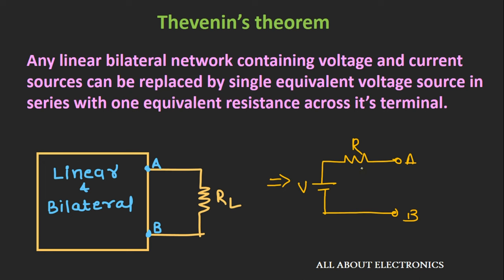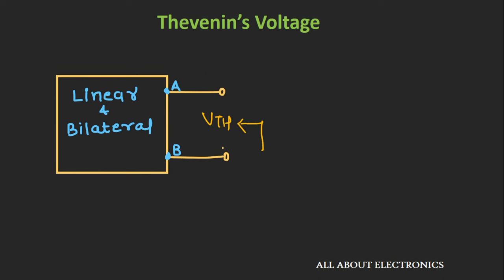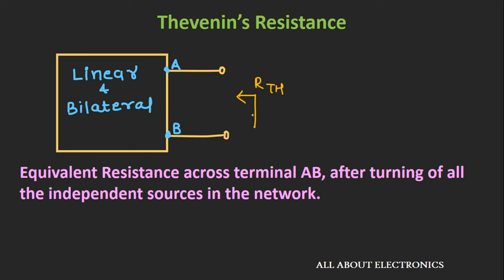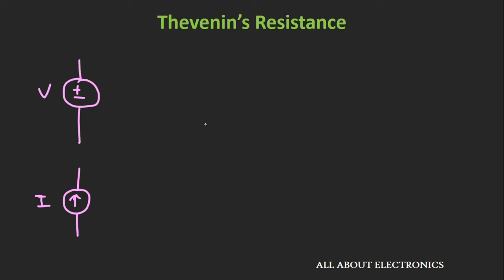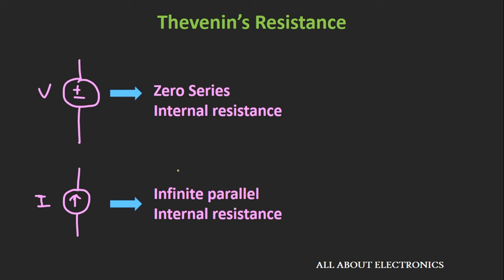In the equivalent circuit, the voltage is known as Thevenin's voltage and the equivalent resistance is known as Thevenin's resistance. Thevenin's voltage is the voltage you find across the network after removing the load. Thevenin's equivalent resistance is the resistance found across the two terminals after removing all independent sources and replacing them by their equivalent resistance. Since an ideal voltage source has zero series internal resistance, you replace it with a short circuit. Since an ideal current source has infinite parallel internal resistance, you replace it with an open circuit.